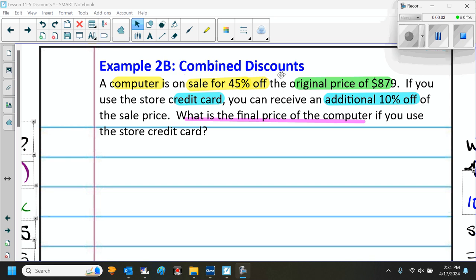Example 2B is Combined Discounts. It says the computer is on sale for 45% off the original price of $879. If you use the store credit card, you can receive an additional 10% off of the sale price. We want to know what is the final price of the computer if we use the store credit card.